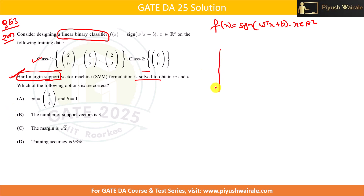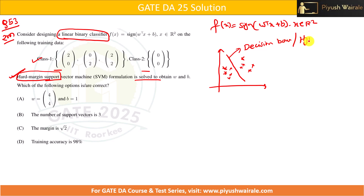First, understand the concept of a support vector machine. In a binary classification problem, we have a decision boundary, also called a hyperplane. The support vectors are the points nearest to that decision boundary — one from each class. Lines (planes) passing through those points are parallel to the main hyperplane. Please watch my video on how SVM works if you haven't already.